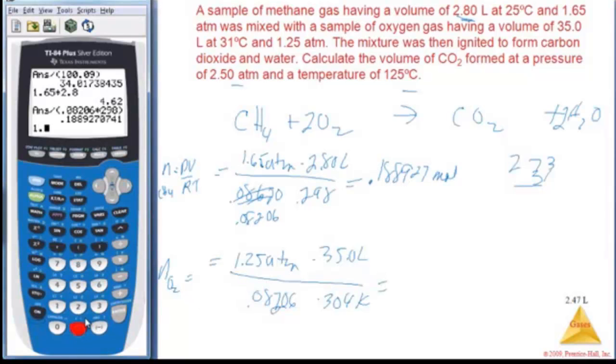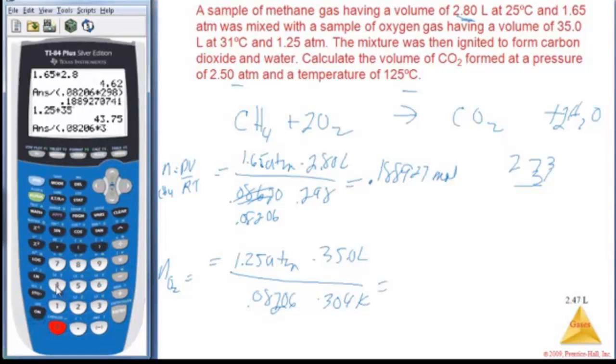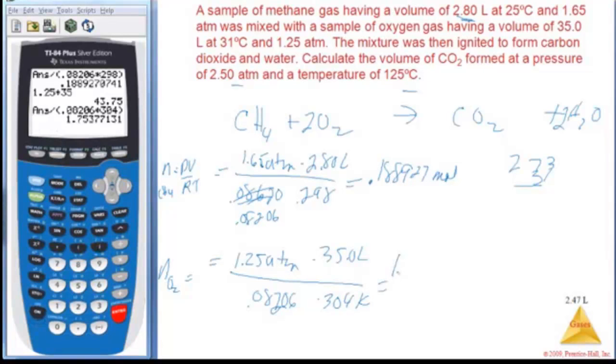Alright, so I've got 1.25 times 35 equals, divide by 0.08206 times 304, close my parentheses, and I get quite a bit more moles, 1.75 moles. This is O2, and this is methane. So I get a whole bunch of O2, plenty of O2.